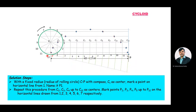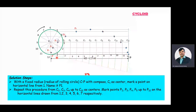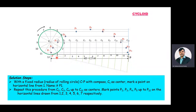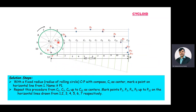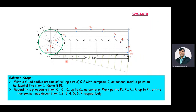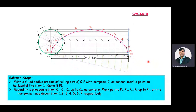Name all those points P1, P2, P3, P4, P5, P6, P7, P8, P9, P10, P11, P12. Then draw a smooth curve through all these points. This smooth curve is the cycloidal curve.